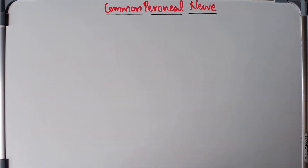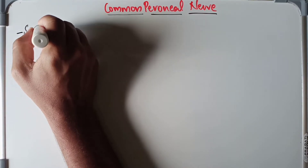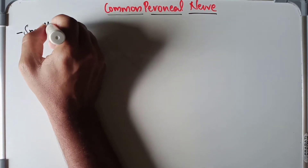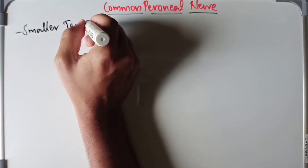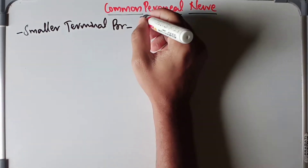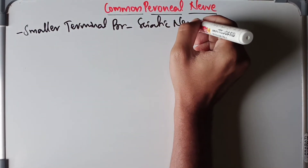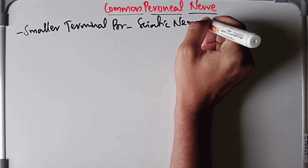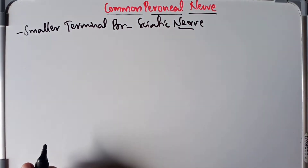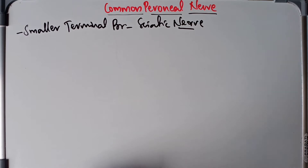When it comes to the anatomy of the common peroneal nerve, it is the smaller terminal branch of the sciatic nerve. The larger terminal branch of the sciatic nerve is nothing but the tibial nerve. We have a complete video on the tibial nerve — make sure to watch that.